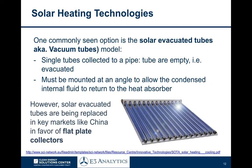One commonly seen option is evacuated tube or vacuum tube models. The single tubes are connected to a pipe, and the tubes are empty — used to flow thermal energy. They must traditionally be mounted at an angle to allow the condenser and internal fluid to return to the heat absorber, with a heat absorption mechanism that delivers the thermal energy via conduit. These are commonly seen and still appear widely in different markets around the world, but slowly they're starting to be replaced in key markets like China by flat plate collectors. China remains by far the world's largest solar thermal market, representing somewhere around 85% of the total global installed capacity for solar thermal collectors.